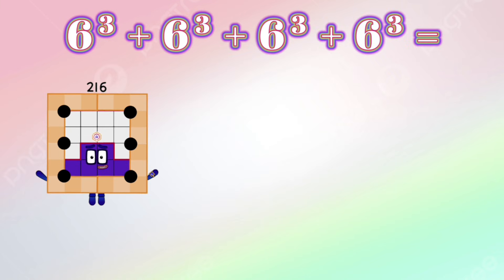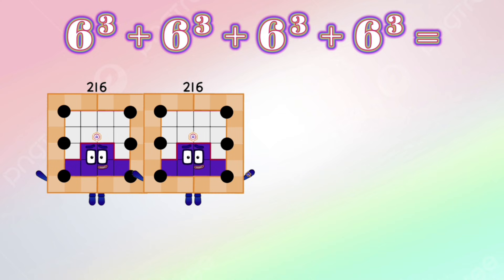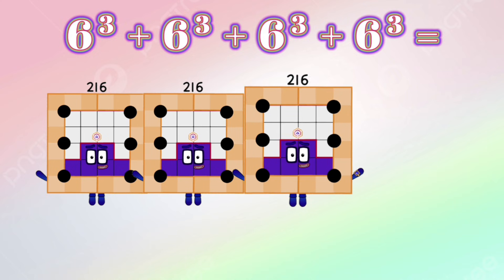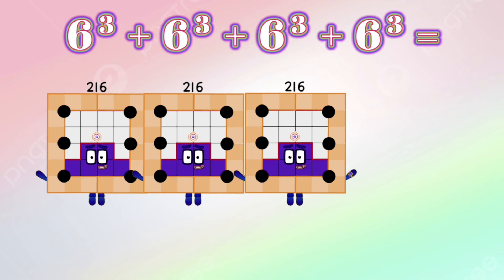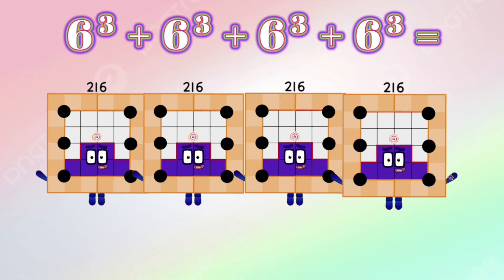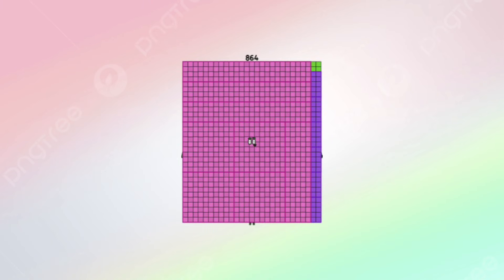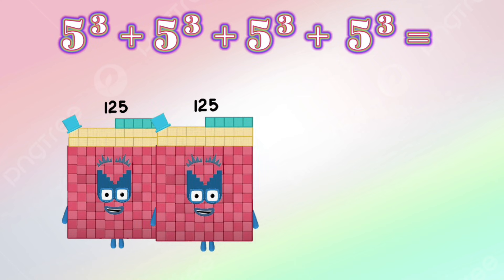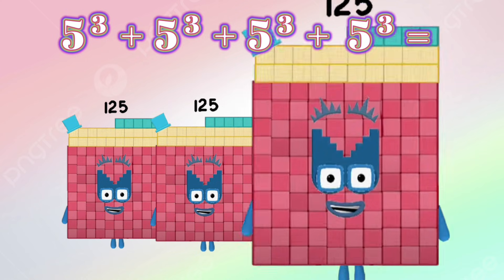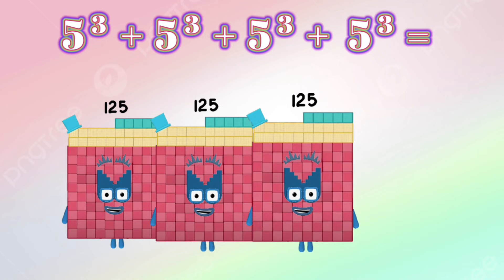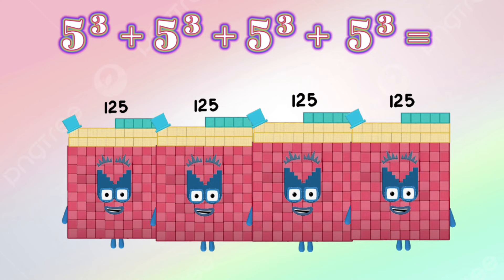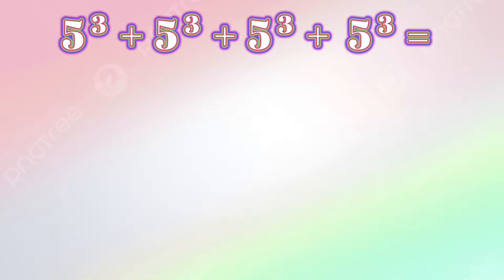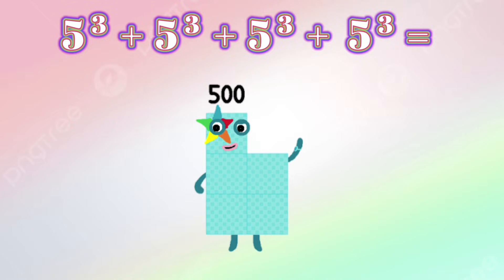6 cube plus 6 cube plus 6 cube plus 6 cube equals 864. 5 cube plus 5 cube plus 5 cube plus 5 cube plus 5 cube equals 500.